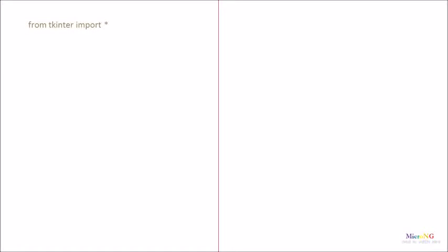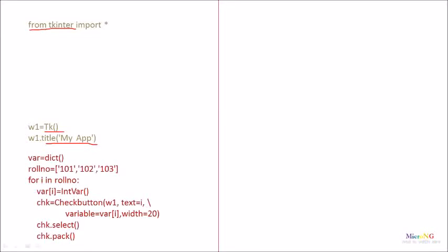For this program, first we are importing the Tkinter module. Then we are creating a window by calling the Tk constructor. The window name is w1 and we are changing the title of our application to MyApp. Before creating the CheckButtons, we create a dictionary for storing the various states of different CheckButtons present in our screen GUI.